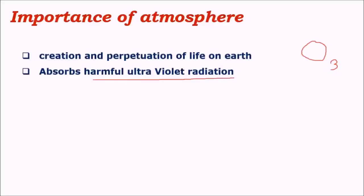Ultraviolet radiations are low-wavelength, high-frequency radiations. The electromagnetic spectrum includes gamma rays, X-rays, ultraviolet radiation, visible light, infrared, and microwaves. UV rays have wavelengths ranging from 1nm to about 400nm, then visible light from 400 to 720nm, infrared from 720nm to 1mm, and then radio waves and microwaves. So ultraviolet radiation has high frequency and low wavelength compared to visible radiation.